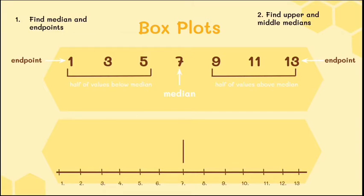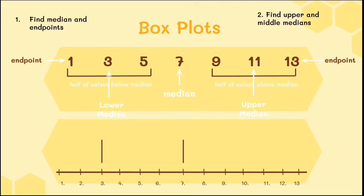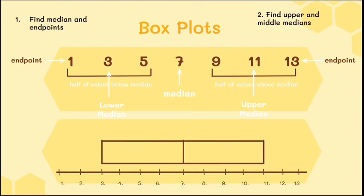We've now divided the data set into values below the median and values above the median. To find the upper and lower median, take the middle value of the below-median section: the middle value of 1, 3, 5 is 3, and the middle value of 9, 11, 13 is 11. Then on your number line, put two more lines at 3 and 11 — that forms your box. Extend two lines to where your endpoints are, and there you have your box plot.